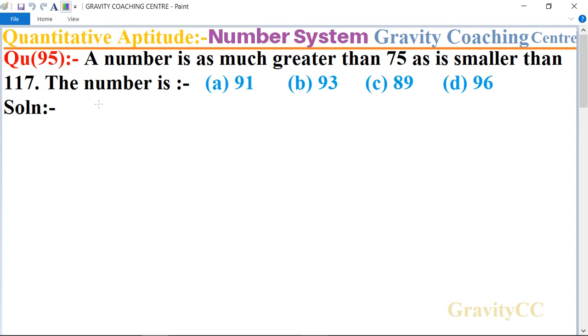In this question, a number which is much greater than 75 and much less than 117. So first we let the number be, let the number be x.